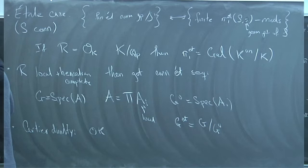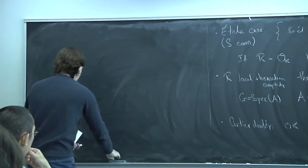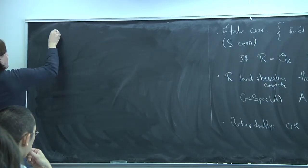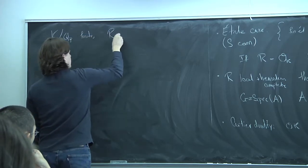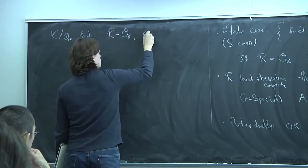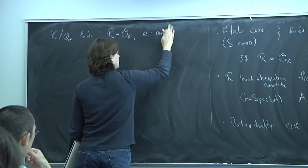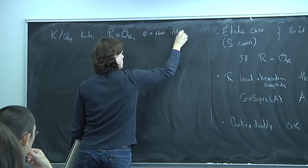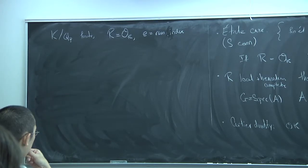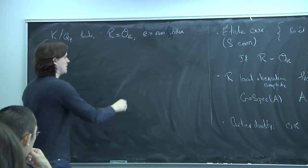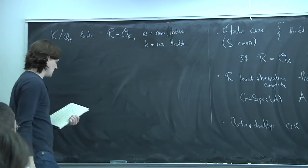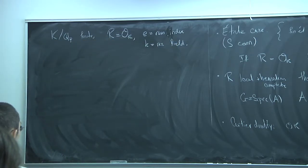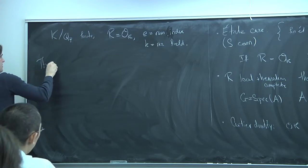For the rest of the day, K is a finite extension of Q_p, R is the ring of integers in K, e is the ramification index — the absolute ramification of K over Q_p — and little k is the residue field.